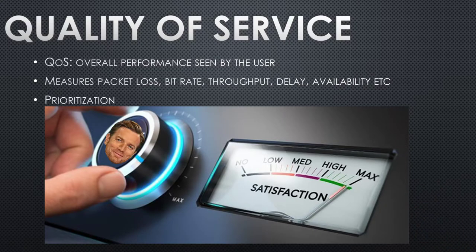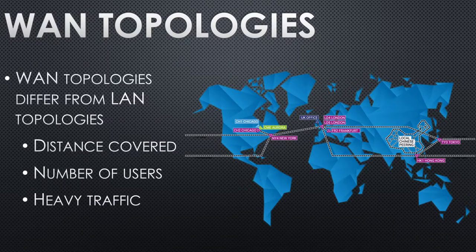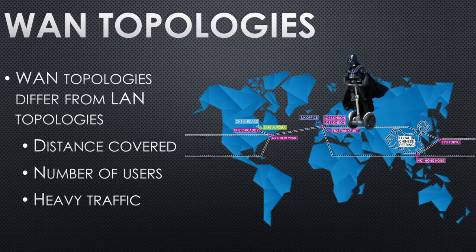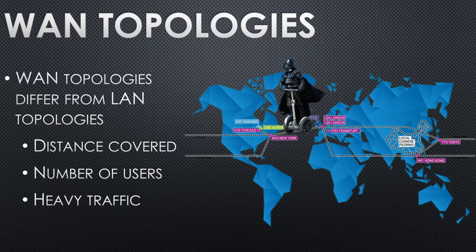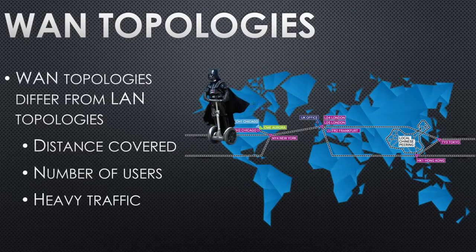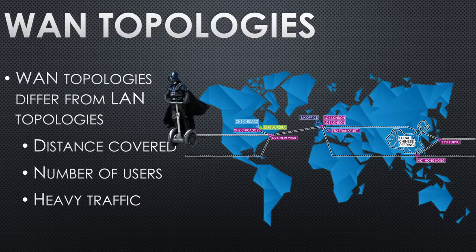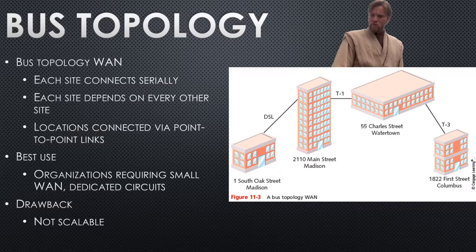For WAN topologies, we'll use the same terms as small LAN topology — star, bus, etc. — but applied differently. We'll talk about distance covered, number of users, and what happens when traffic gets heavy. Bus topology was considered kind of obsolete in small networks since if one piece goes, the whole thing is down.